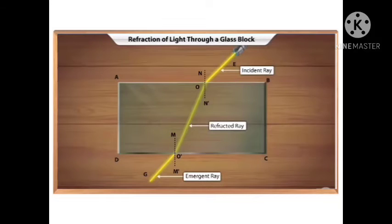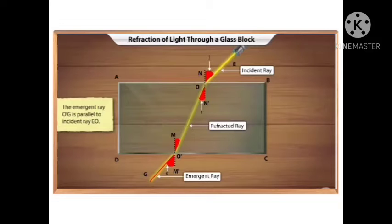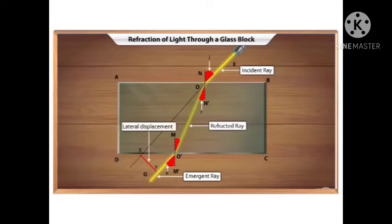Since AB and DC are parallel surfaces, the angle N'OO' (angle of refraction R) equals angle OO'M. Also, the angle of incidence I equals the angle of emergence E, according to the principle of reversibility of the path of light. Thus, the emergent ray O'G is parallel to the incident ray EO. The incident ray is displaced from its original path by a distance XY, which is referred to as lateral displacement.